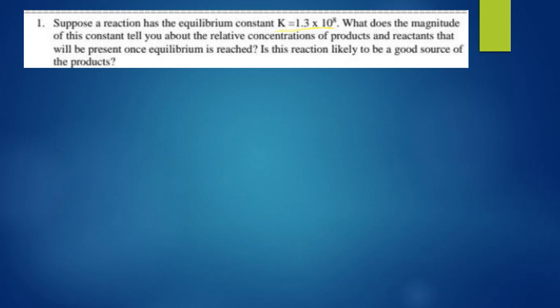What is the first question saying? The first question says: suppose a reaction has the equilibrium constant K which is 1.3 times 10 to the power 8. What does the magnitude of this constant tell you about the relative concentrations of products and reactants that will be present once equilibrium is reached? Is this reaction likely to be a good source of products?